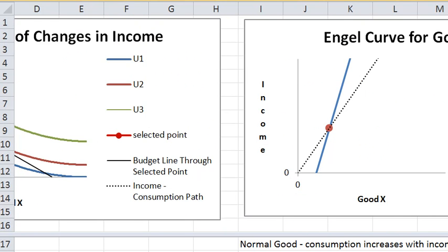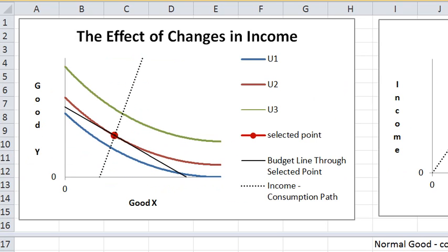Now let's get back to the picture and let's take a look at what's in the graph here. So I am going to change income a little bit and you can see what's being plotted. So the red dot represents a choice point on the given budget line.